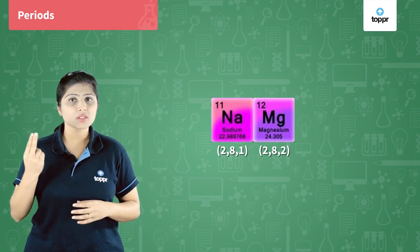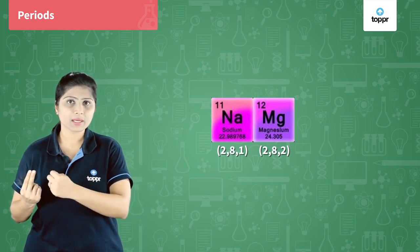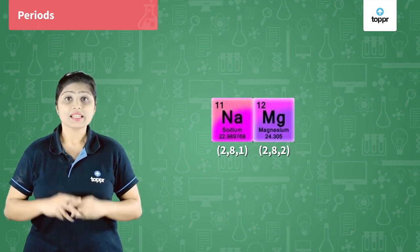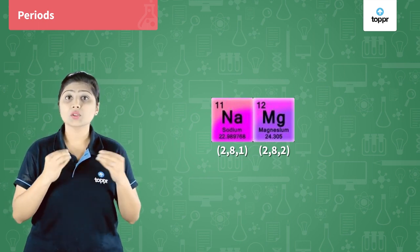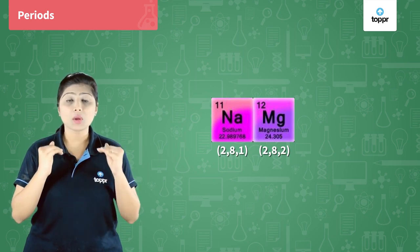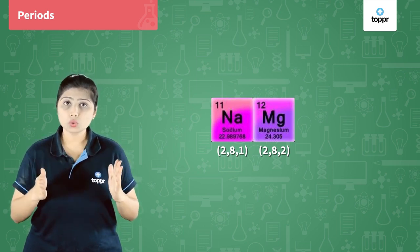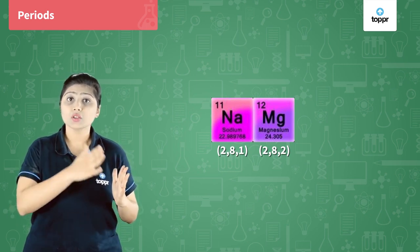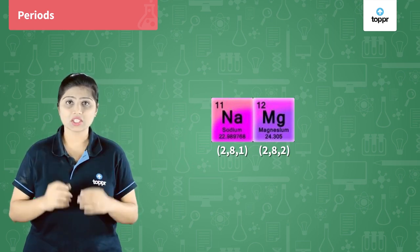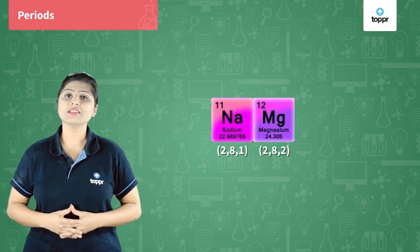2 electrons in the first orbit, 8 electrons in the second orbit and remaining 1 electron in the last orbit. Similarly, magnesium is the 12th element. Its atomic number is 12, it has 12 electrons. So they are arranged as 2, 8, 2. Both of them have 3 shells, so they belong to period 3.